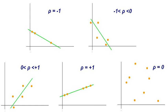The arithmetic mean is the sum of a collection of values x1 plus x2 plus x3 plus... plus xn, divided by the number of items in the collection n.